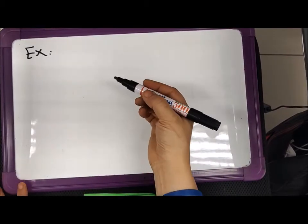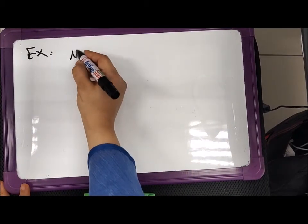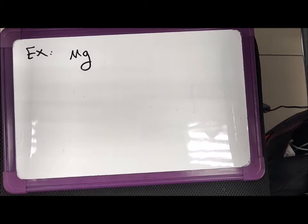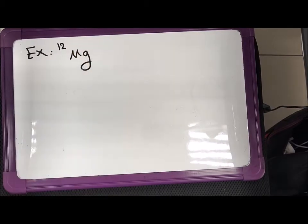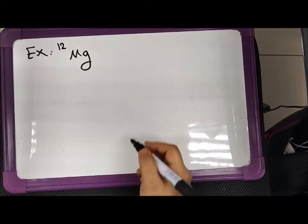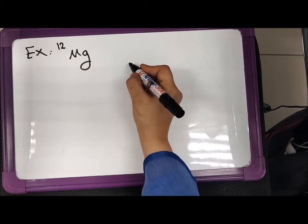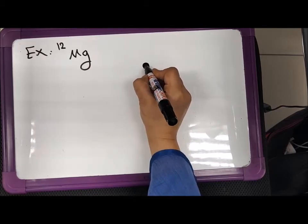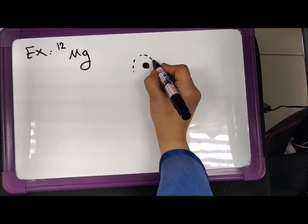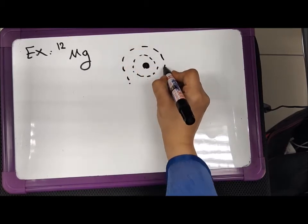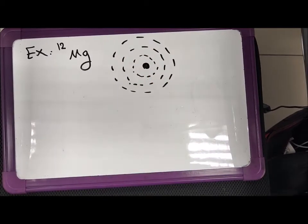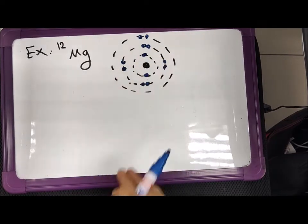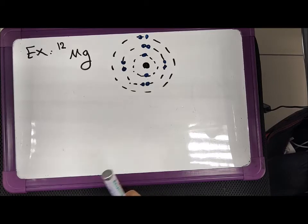Let's look at an example using magnesium, Mg. Magnesium actually has 12 electrons in the ground state. So if this is the nucleus and the first shell, second and the third shell, it has some electrons on the outermost shell too. As you can see, this is the diagram of the electronic configuration of magnesium.